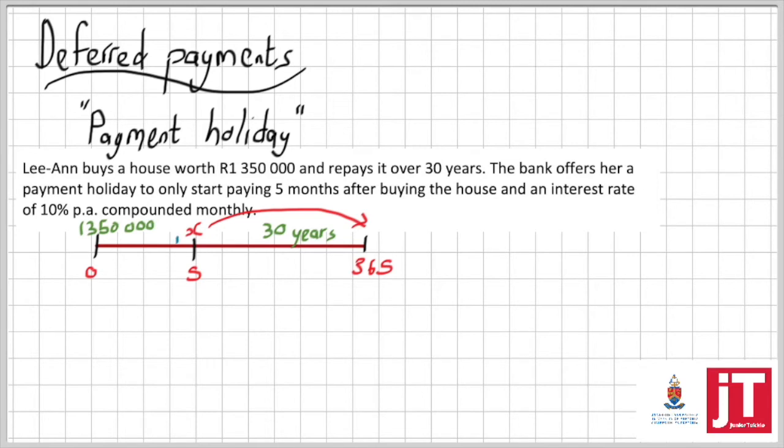But what actually happens—and this is something that you've got to understand—is that the p-value formula is always one month before we start paying. So that 1.35 million is not in the right place. That 1.35 million, if I want to use the formula, must actually be calculated forwards to get to the actual p-value of the formula, because the formula's p-value is one month before we start our payments.